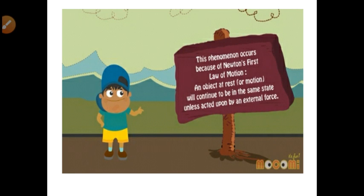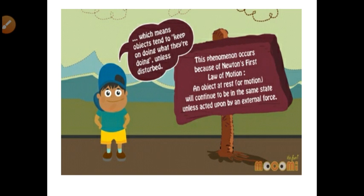An object at rest or in motion will continue to be in the same state of rest or motion unless acted upon by an external force. This is Newton's first law of motion. It means objects tend to keep on doing what they are doing unless disturbed.